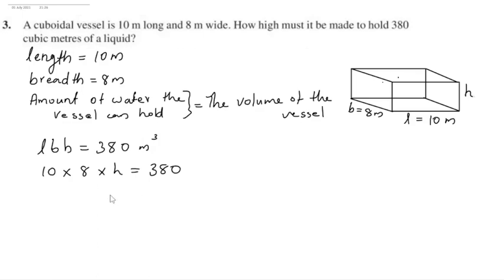Transpose this 10 and 8 to the right hand side to find the height. The height of the vessel is 38 by 8 which is equal to 4.75 meter.